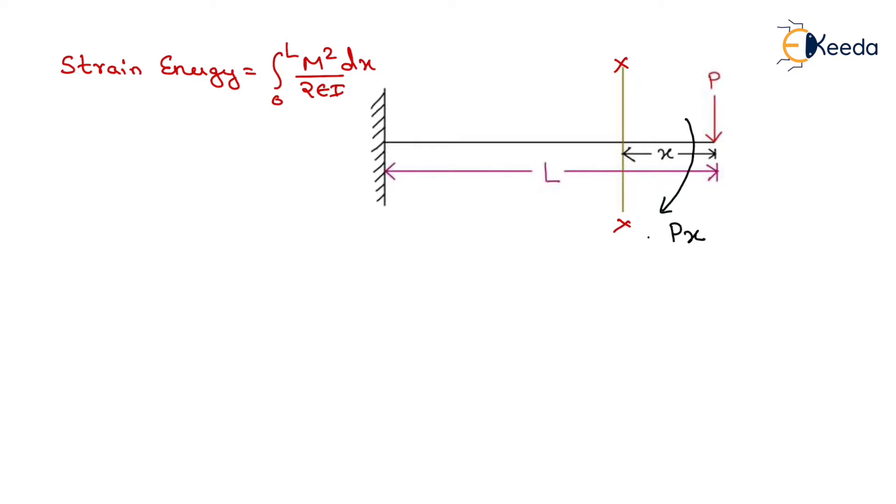We just write here the sign of this moment that is minus because of the hogging bending moment. So, its total value will be equals to minus P into x.